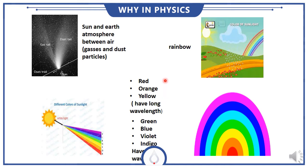How can we see these colors? Sunlight is made of seven colors. Red, orange, and yellow have long wavelengths, while green, blue, violet, and indigo have short wavelengths.